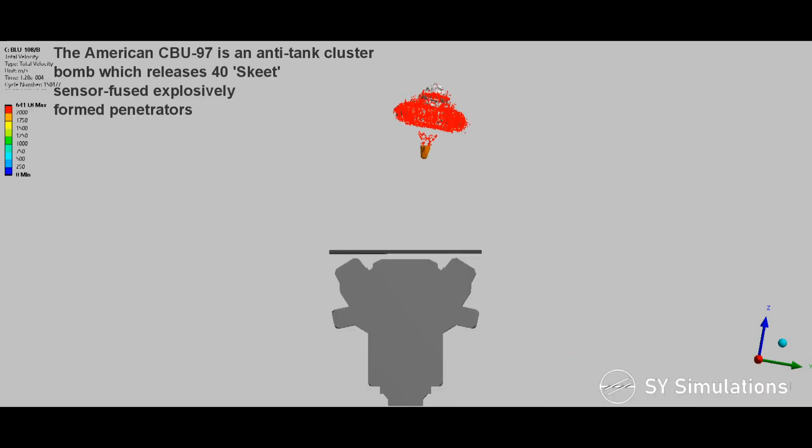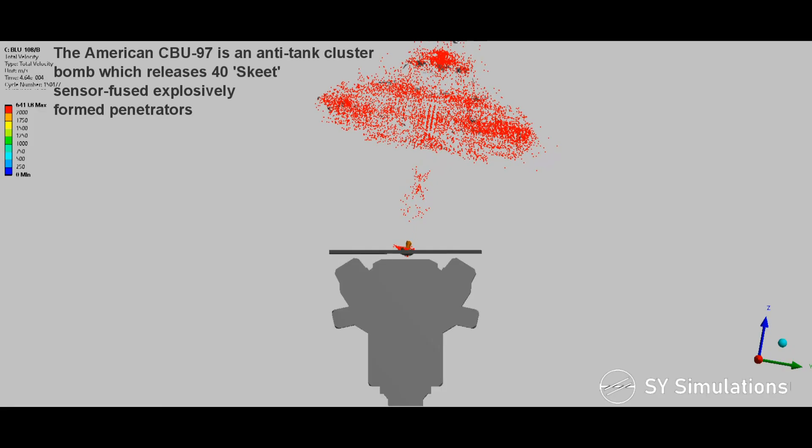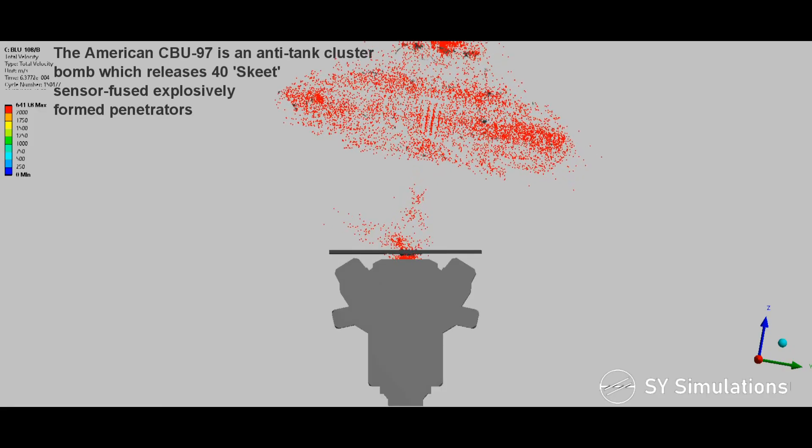The American CBU-97 is an anti-tank cluster bomb which releases 40 skeet sensor-fused explosively formed penetrators.